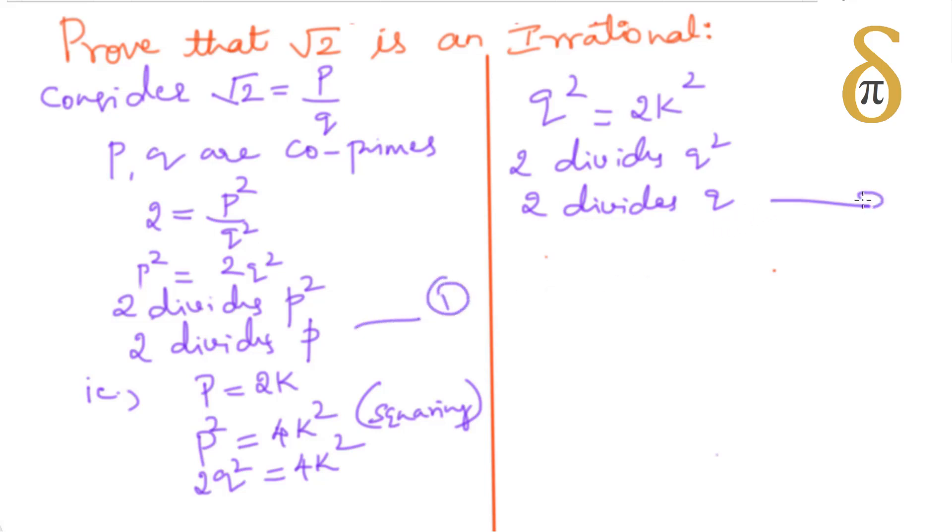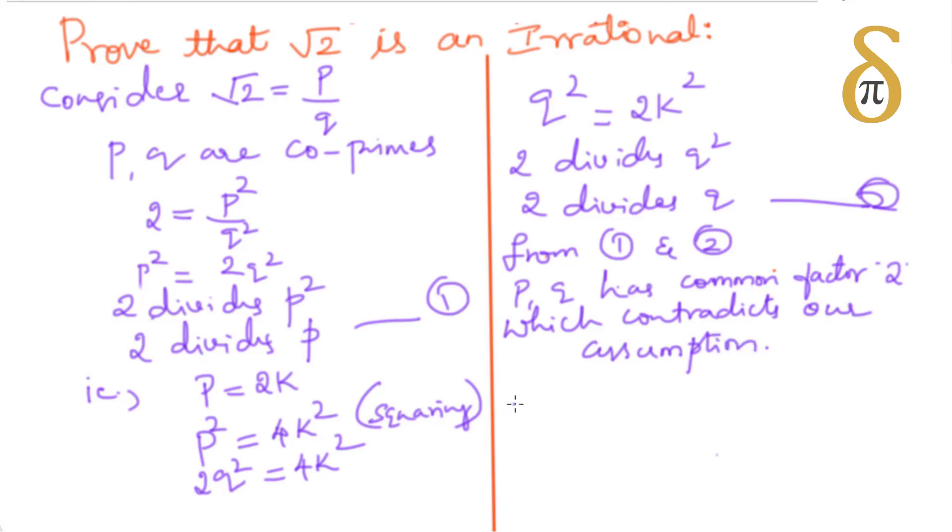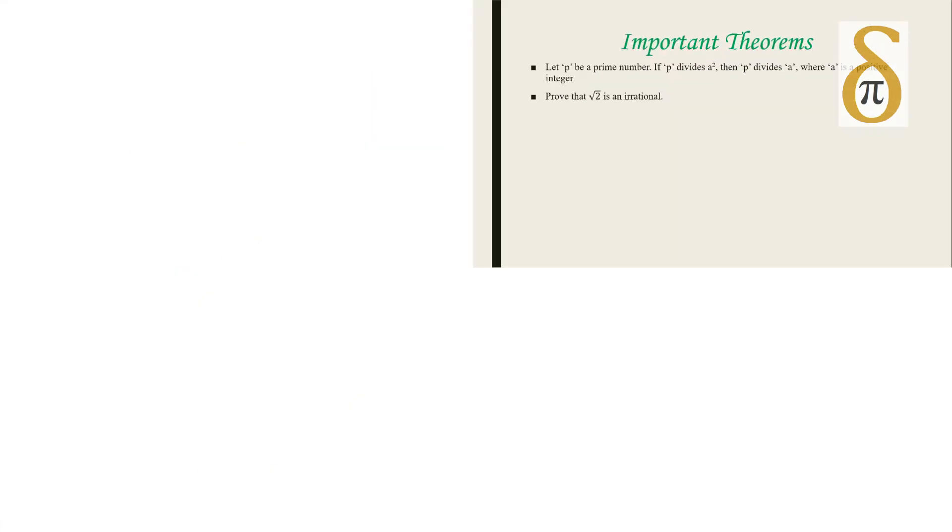2 is a factor of q as well as 2 is a factor of p. It means p and q have common factor 2, which contradicts our assumption that we took p and q are coprimes, meaning p and q have a common factor other than 1. Hence it is a contradictory statement. Hence root 2 may not be rational. Root 2 is an irrational number.